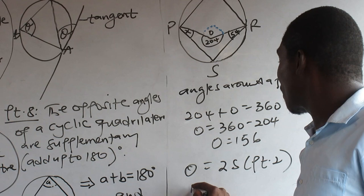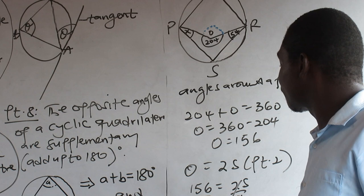There is 156 plus what? 2X. 2. 2. And what is S? 78.